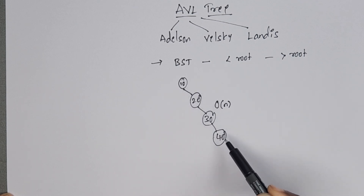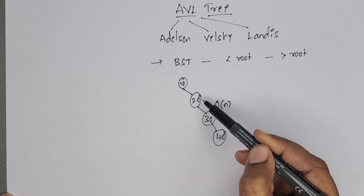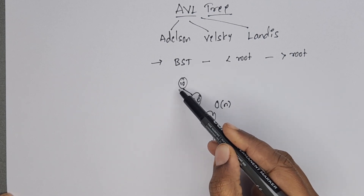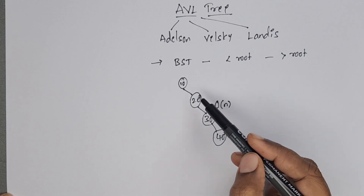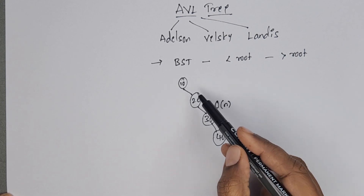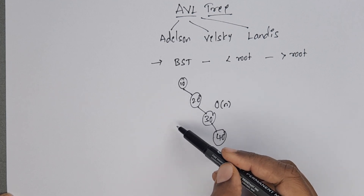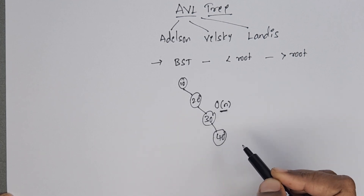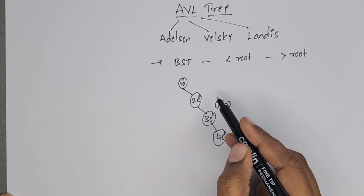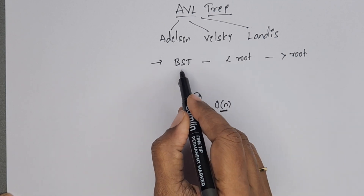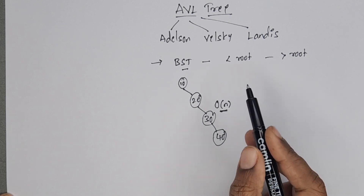In case of a skewed binary tree — this is a right skewed binary tree — every element has only a right child, there is no left child. This is called a right skewed binary tree. In case of right skewed or left skewed binary tree, the time complexity is O(n), so it requires more time to search an element. That is the disadvantage of binary search tree.